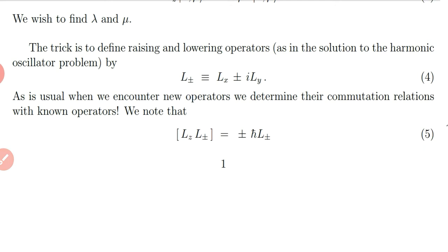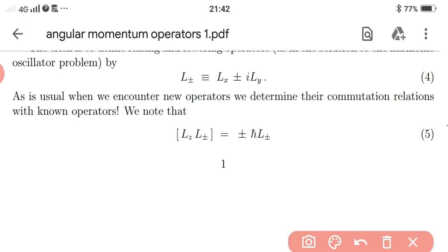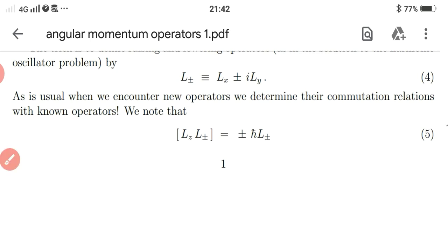We can prove that the commutation relation of Lz and L± is equal to ±ℏL±. When we take the plus sign it is plus, and when we take L minus it is minus. This can be verified as follows.